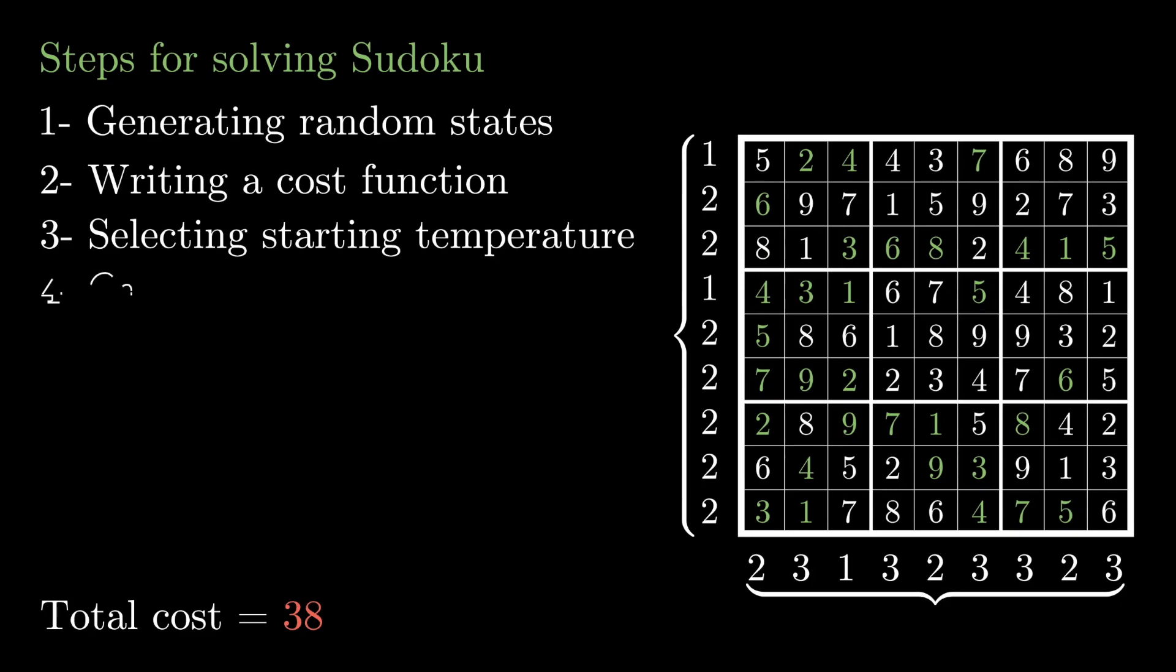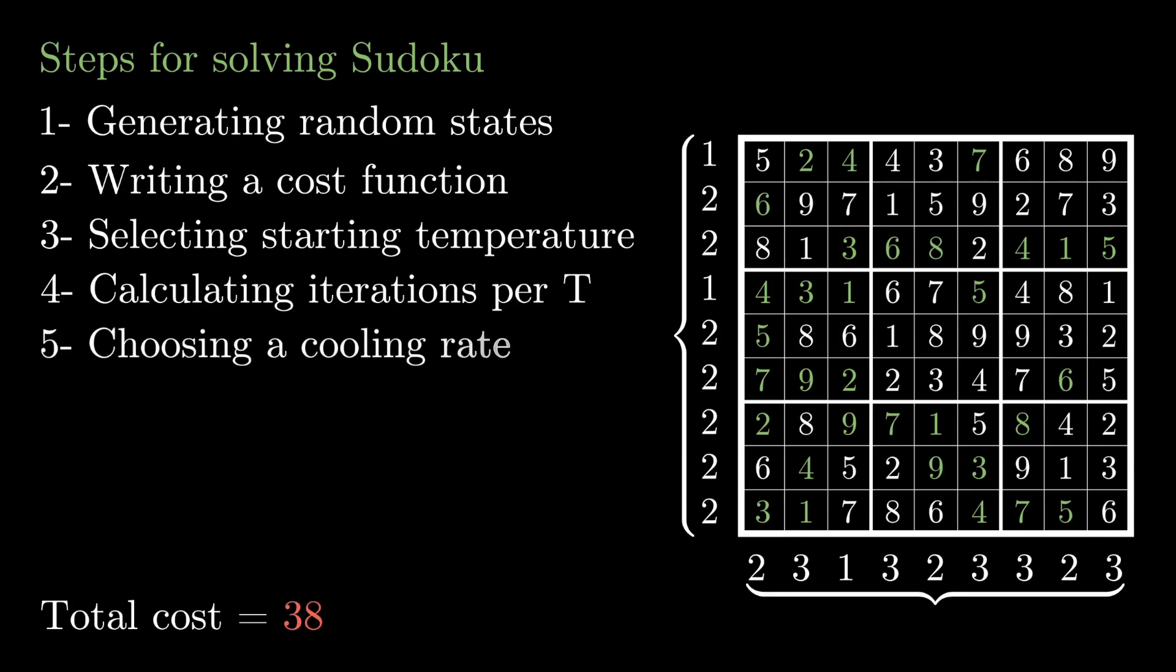The next thing is calculating the number of states or iterations for each temperature. And that will be the number of free entries squared. So let's say for a given temperature, we'll try a hundred or so states to find whichever one is the best one. And this is called homogenous simulated annealing.